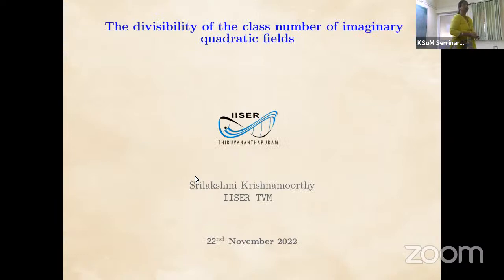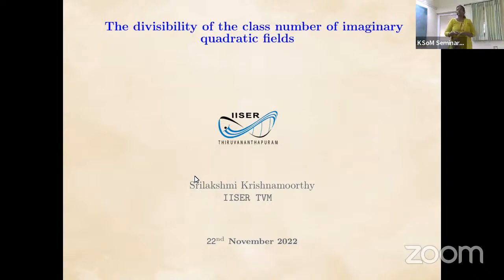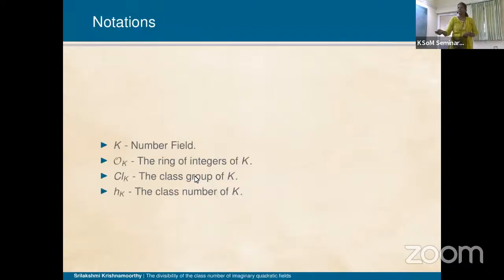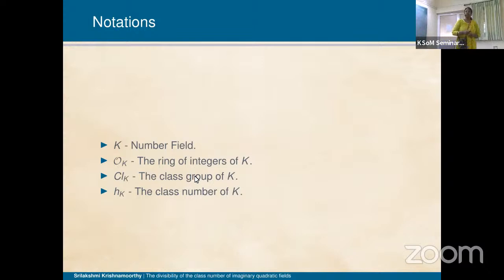I would like to thank the organizers for giving this nice opportunity. Today I will be talking on the divisibility of the class number of imaginary quadratic fields. The notations: K is a number field, O_K the ring of integers of K, Cl_K the notation for the class group of K, and h_K the class number of K.